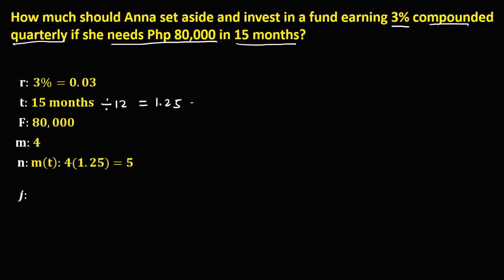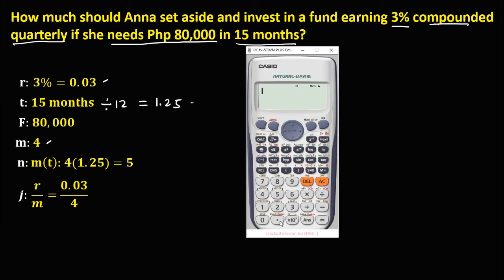To solve for the interest per period, we use the formula: rate over the compounding period. Since the rate is 0.03 and the compounding period is 4, we have 0.03 divided by 4. Moving the decimal 3 places to the left gives us 0.0075. So 0.0075 is the interest per period.